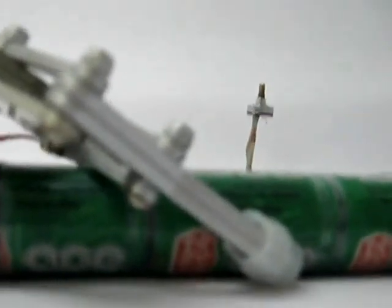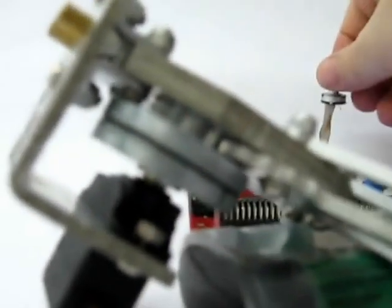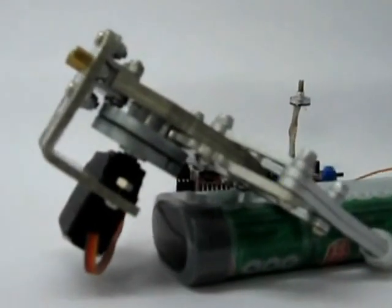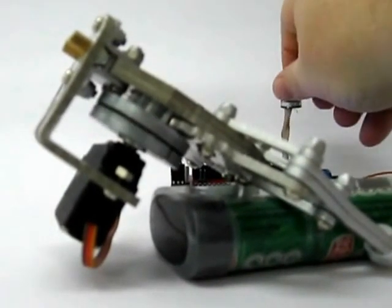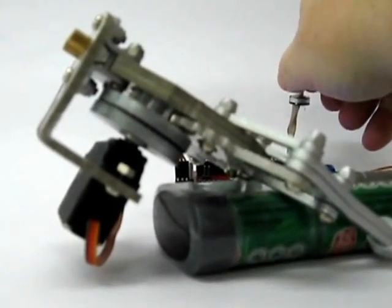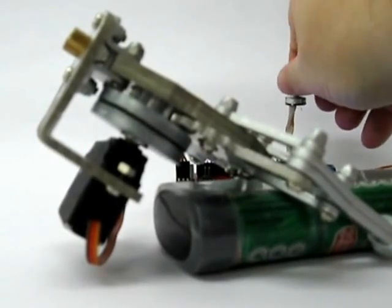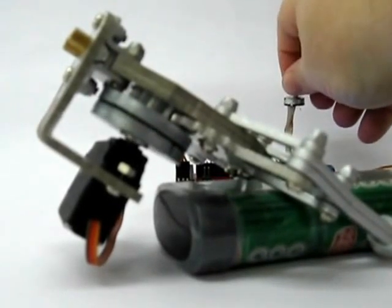But at the same time, the servo is protected from damage by the clutch. As you can see there, the servo, the plate on the servo is turning when the gripper is not.